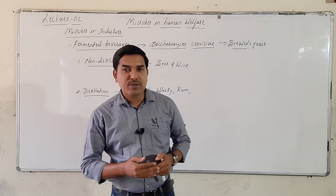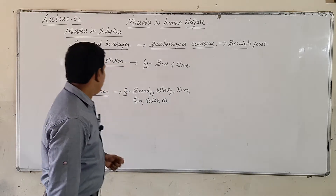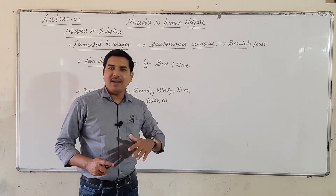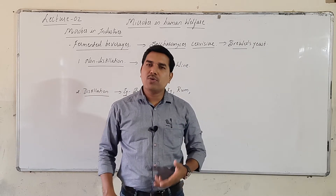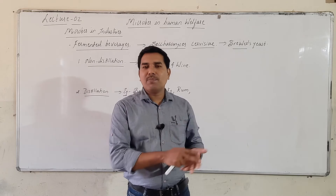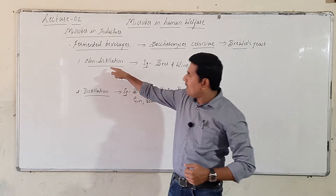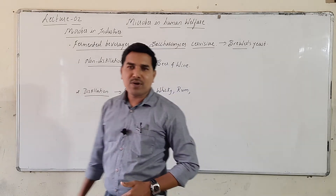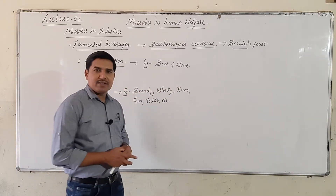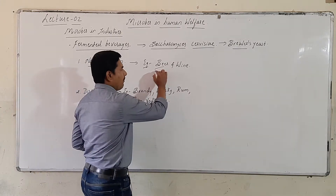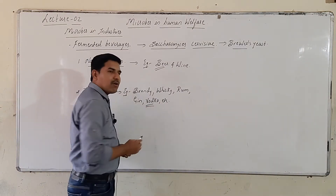Yeast undergoes self-poisoning at an alcohol percentage of around 12 to 13 percent, which is why beyond that the alcohol percentage cannot be increased naturally - we have to increase it artificially through distillation. Non-distilled products are obtained directly by fermentation of yeast. Out of all brands, beer has the least alcohol concentration at around 5 to 7 percent, while vodka has the highest at nearly 80 percent.